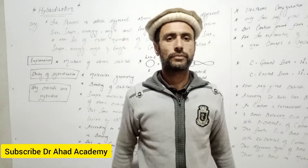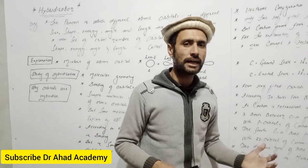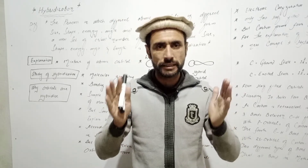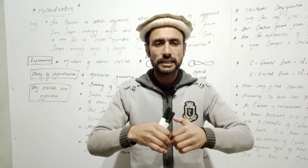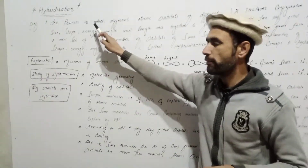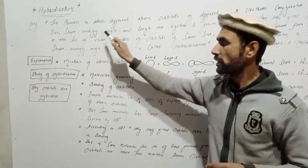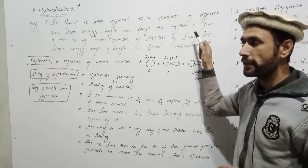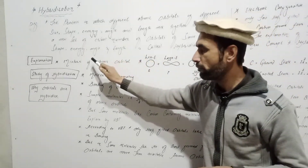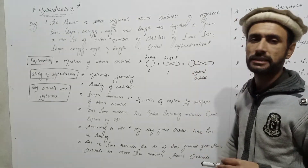The orbitals are mixed together. The process in which different atomic orbitals of different size, shape, energy, angle, and length are mixed together to form an equal number of orbitals of the same size, shape, energy, angle, and length is called a hybrid orbital, and this process is called hybridization.